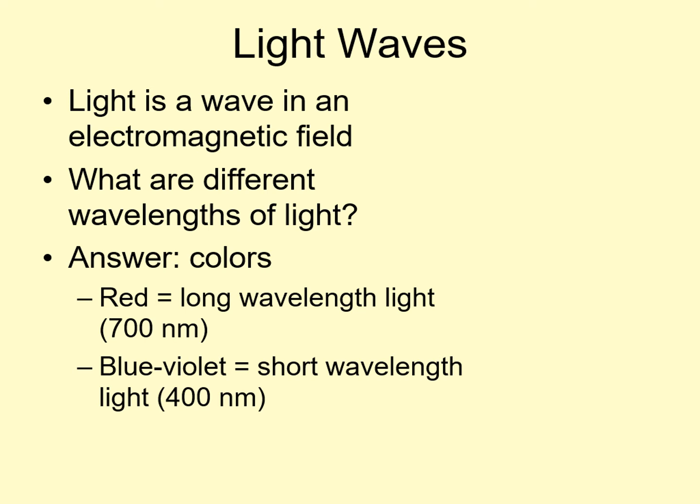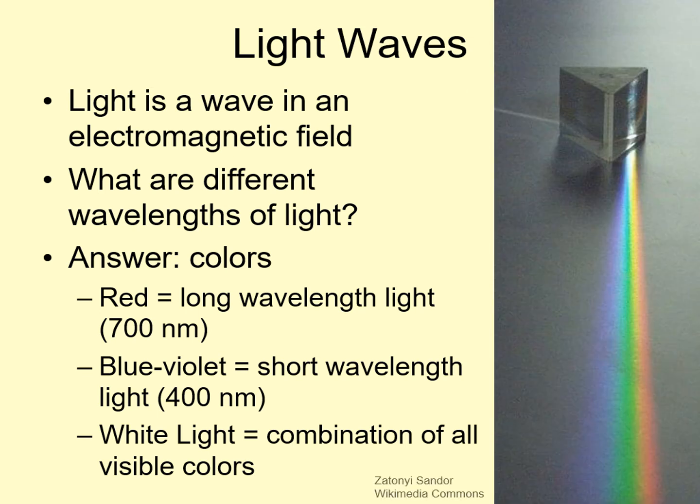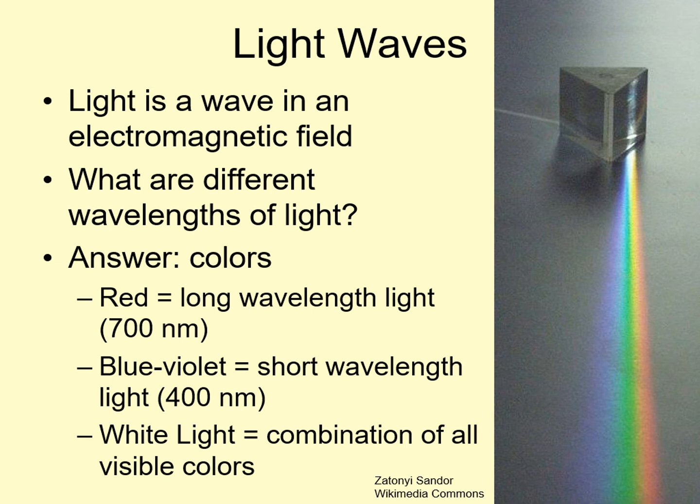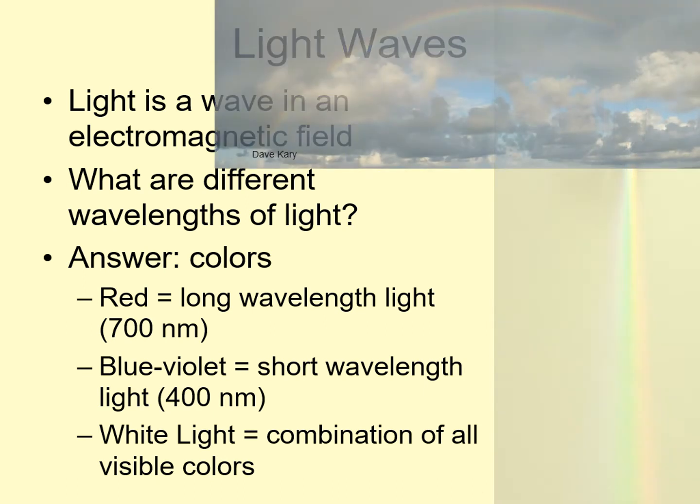Many colors we see are combinations of many different wavelengths of light. In particular, white light is a combination of all of the visible colors. This is why a prism can break light into colors. The colors are already there. They just haven't been separated out. A rainbow works the same way, with raindrops acting as prisms.